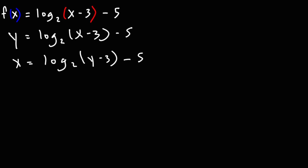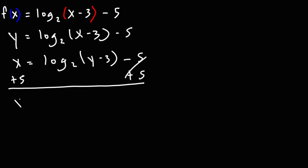Third, now we need to solve for the y variable. In order to do that, I'm going to add 5 to both sides. So I'm going to have x plus 5 is equal to log base 2 of y minus 3.